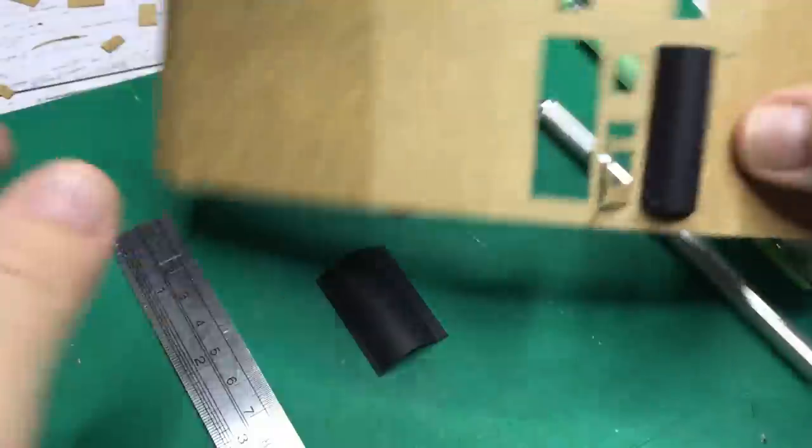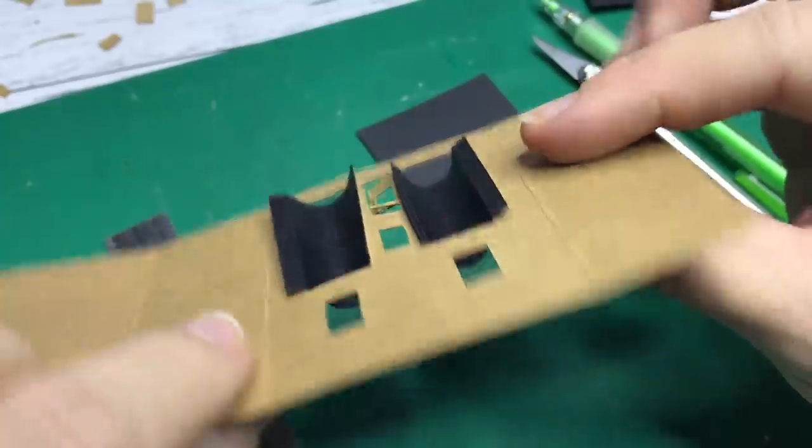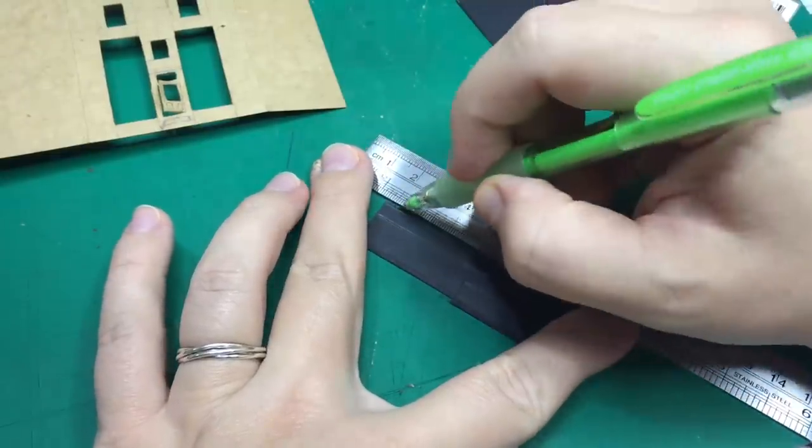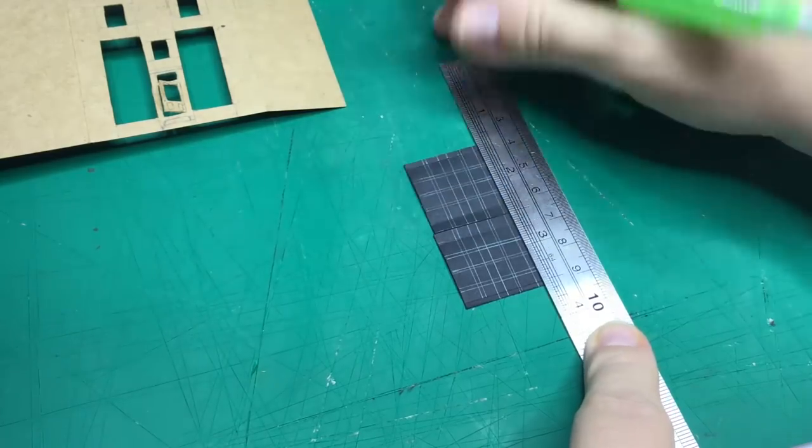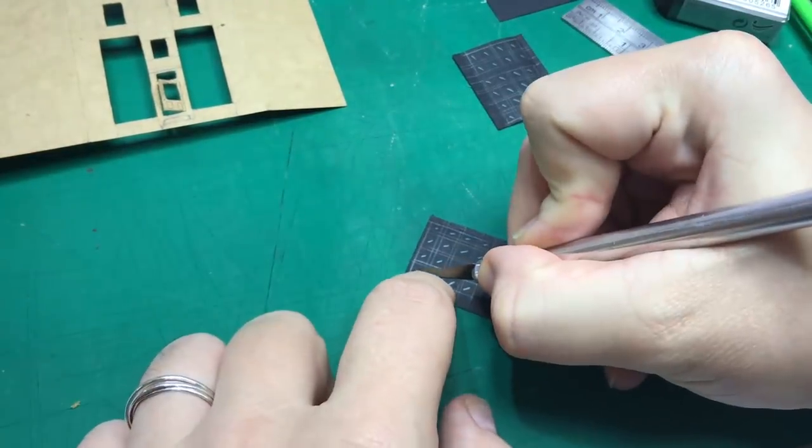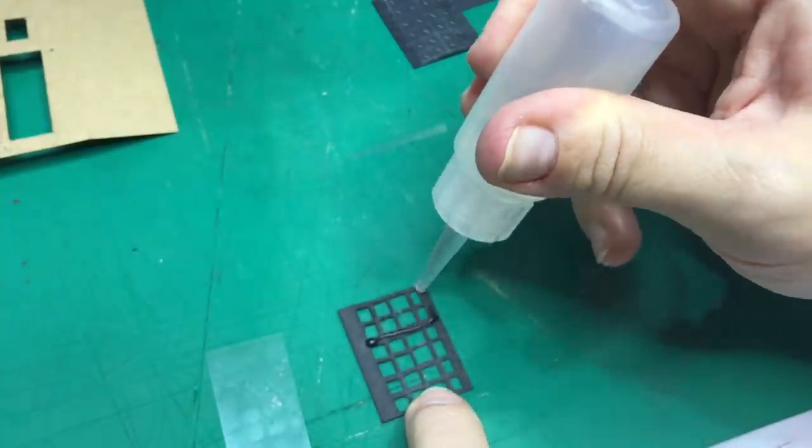As you can see I've cut out all the windows with a craft knife and here I am creating the large shop front windows. I made guidelines so I know where to cut and then cut out all the little windows. When that is done I cut a piece of acetate to size and glue it behind the window frame to make it look like glass.